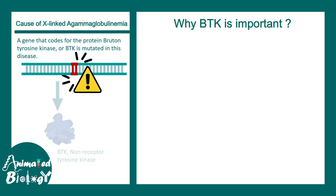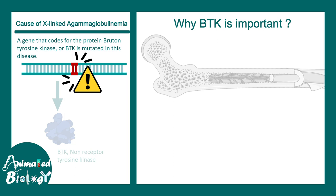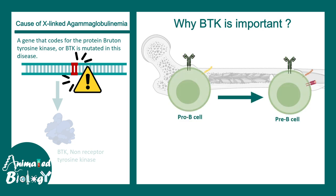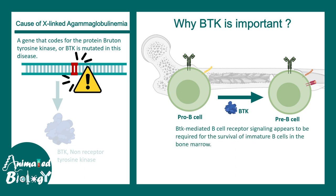BTK is important because in the bone marrow, while a B cell is developing, a pro-B cell gets eventually converted to a pre-B cell. In this conversion process there are several signaling cascades going on, and one such cascade is modulated by the enzyme BTK. So once BTK is absent, this particular step of B cell development does not take place.